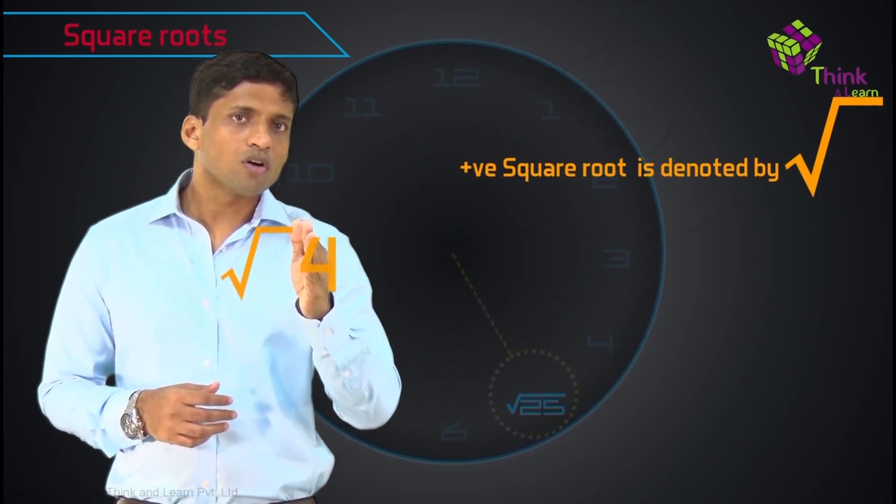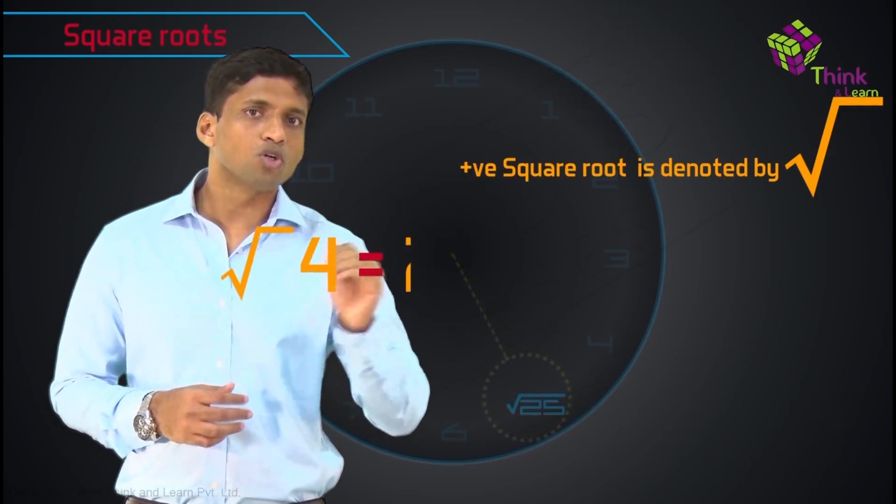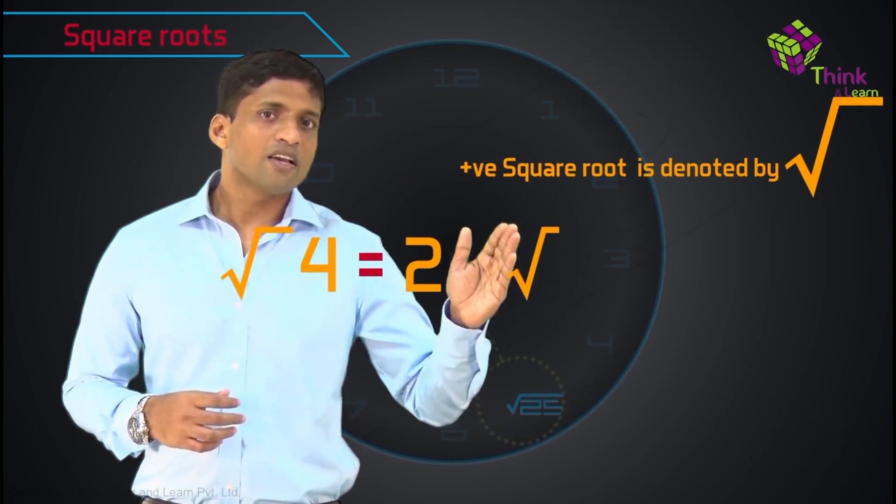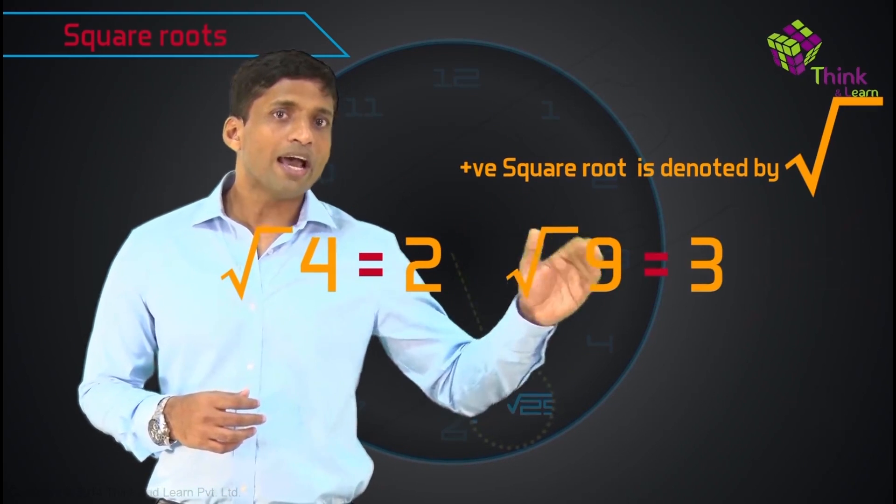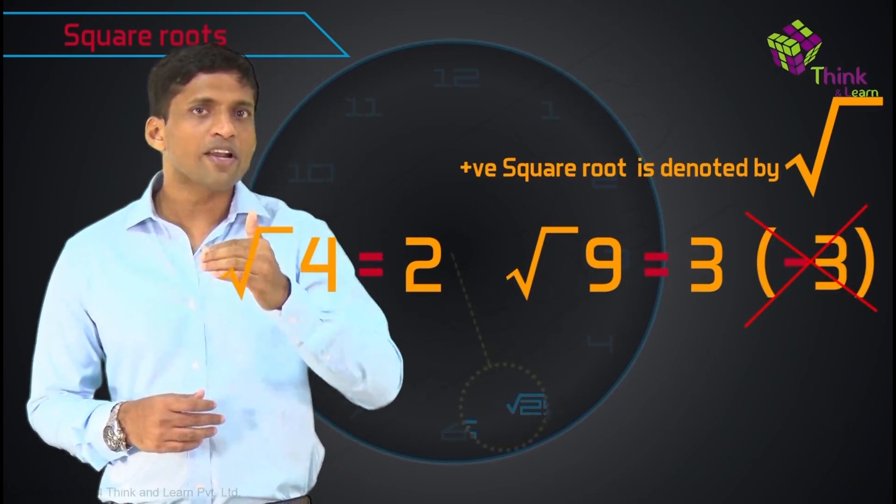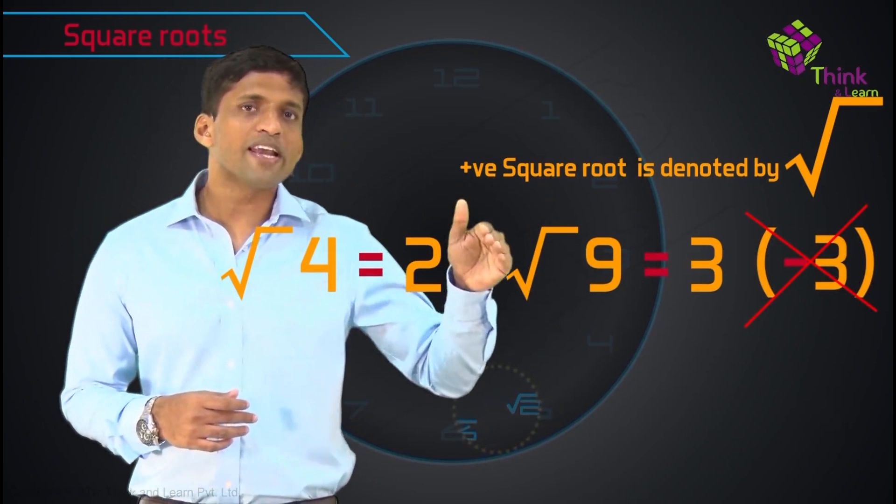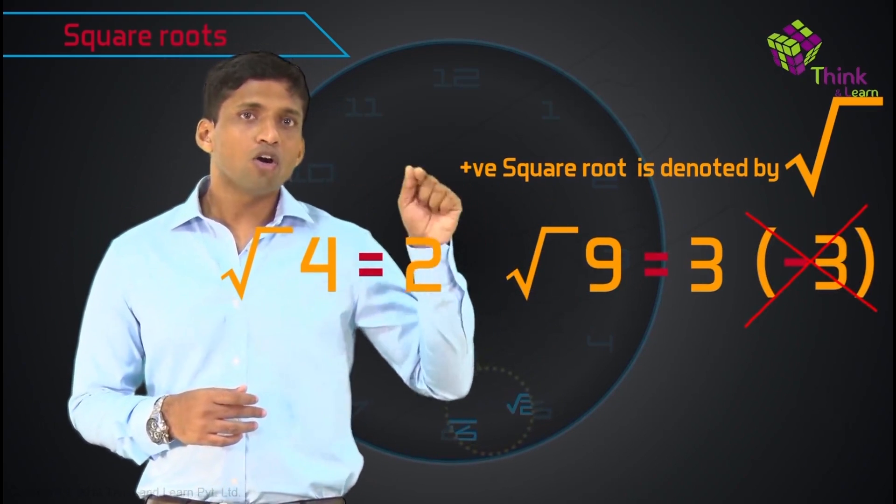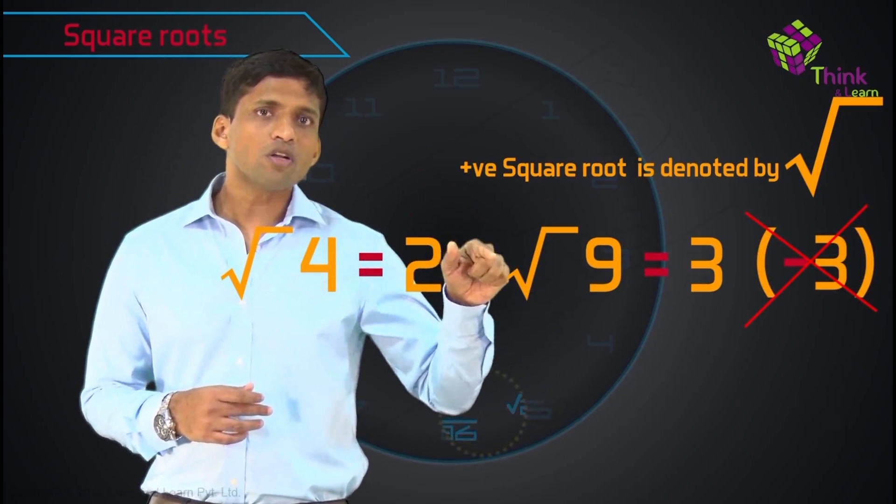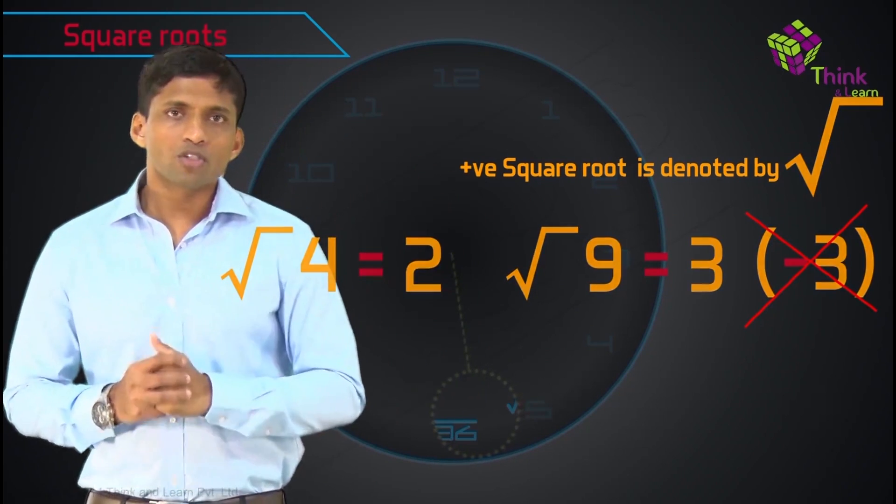Positive square root is denoted by a symbol like this. For example, square root of 4 is represented this way, that's equal to 2. Square root of 9 is represented like this, it's equal to 3 and not minus 3. Because as I told you, we will only consider the positive root, positive square root of a natural number. So it's very simple.